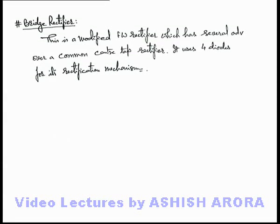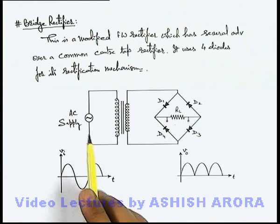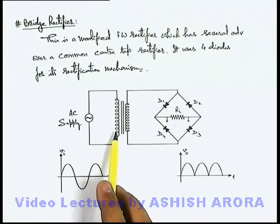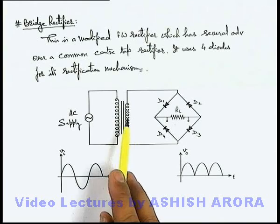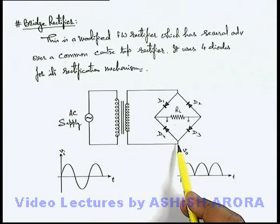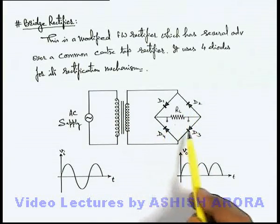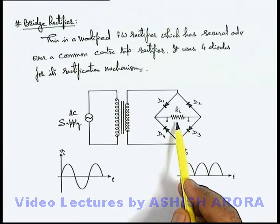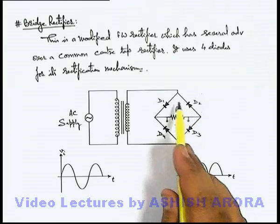Let's discuss the basic circuit diagram of a bridge rectifier. In this diagram you can see that to the AC supply we connect the primary coil of a step-down transformer, and to the secondary coil — without using a center tap — we connect its 2 terminals to a circuit made up of 4 diodes in a specified manner with a load resistance, which is used for the rectification mechanism.